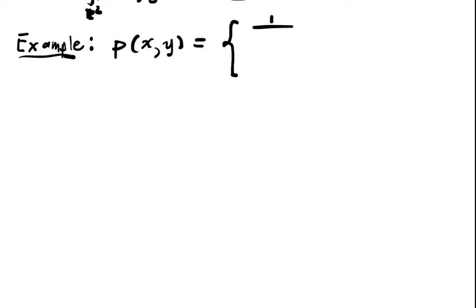Now we can just write some examples. Let's start with a very simple joint distribution. Let's say P(x,y) is equal to 1/(B-A)(D-C) if (x,y) is in [A,B] × [C,D].